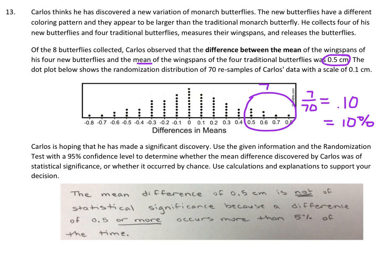The mean difference of 0.5 cm is not of statistical significance because a difference of 0.5 or more extreme occurs more than 5% of the time — it occurs 10% of the time. If something occurs more than 5% of the time, it's considered normal. So it's not a significant discovery; the difference in wingspan was just due to random sampling and chance.